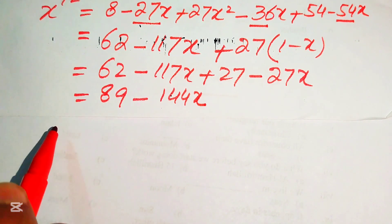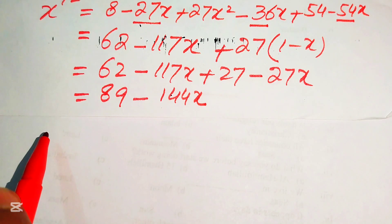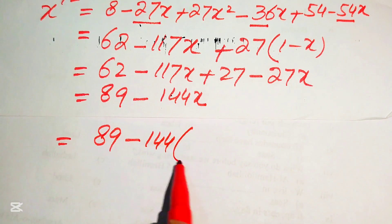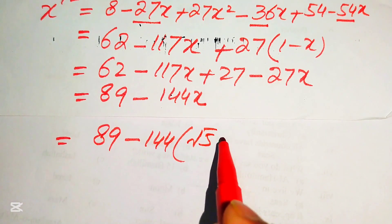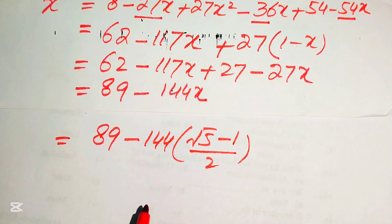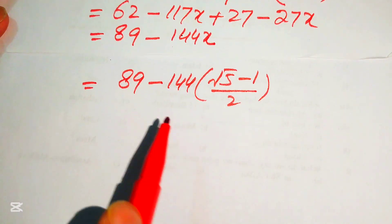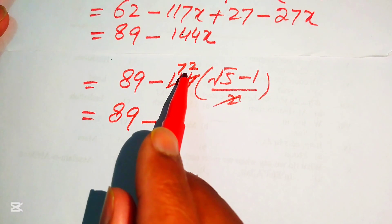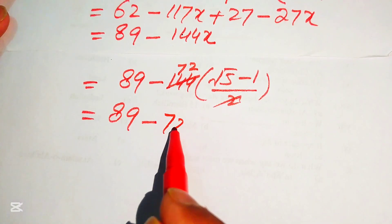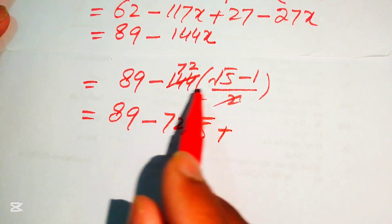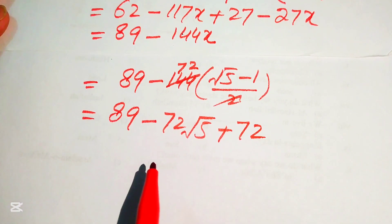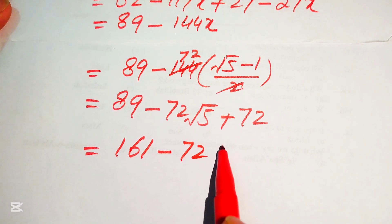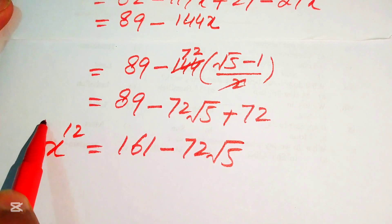We substitute the original value x = (√5 − 1)/2: x¹² = 89 − 144·(√5 − 1)/2 = 89 − 72(√5 − 1) = 89 − 72√5 + 72 = 161 − 72√5. This is the final answer.